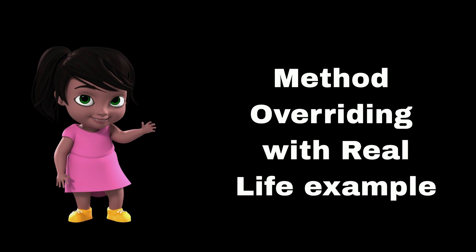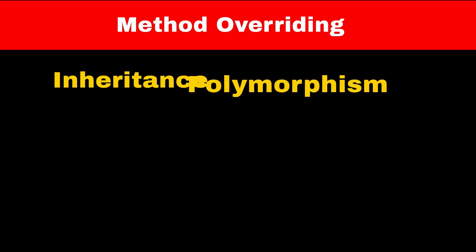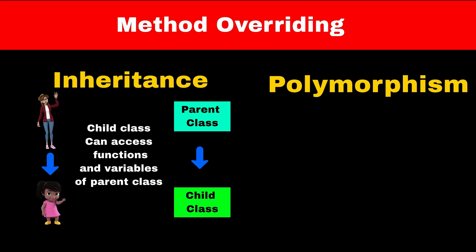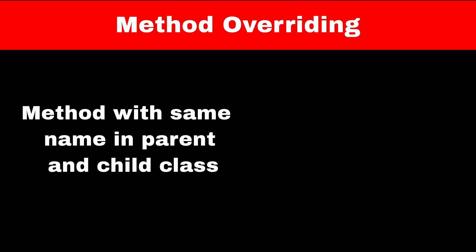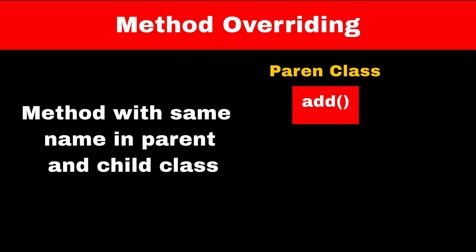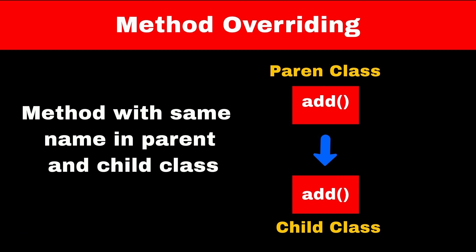Method overriding is a feature that allows us to use the power of inheritance and polymorphism. Inheritance means a child class can access variables and methods of the parent class, and polymorphism means one object or function can have multiple forms. Method overriding is a feature that allows us to have multiple functions with the same name but in different classes - that is, in the parent and child class.